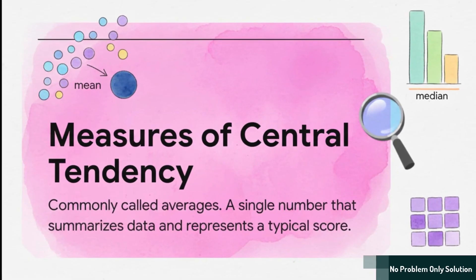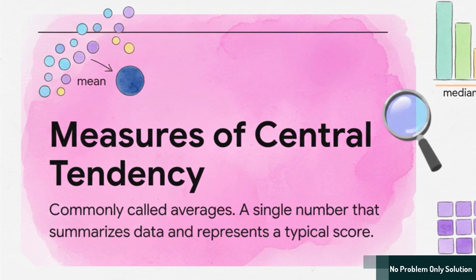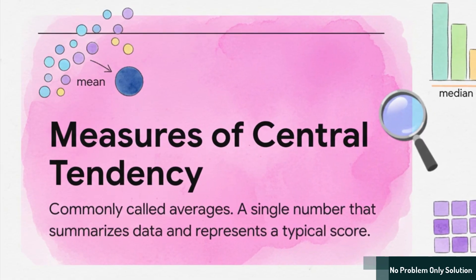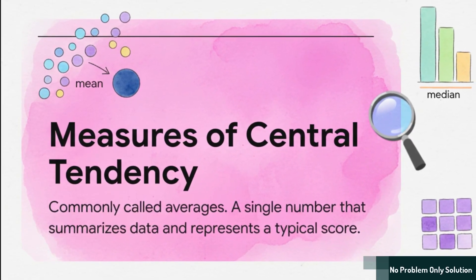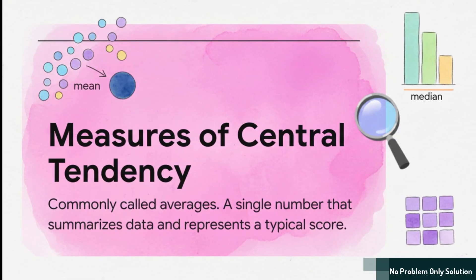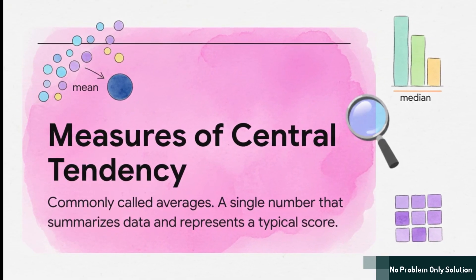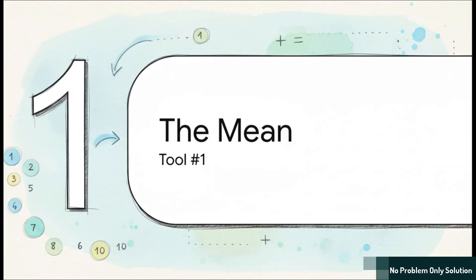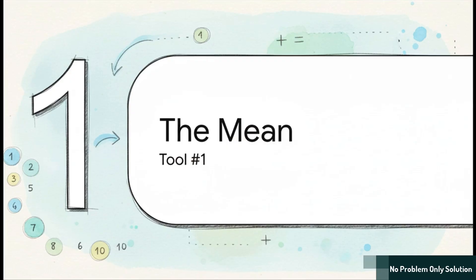Well, the answer is this powerful concept called Measures of Central Tendency. Yeah, I know, it sounds super academic, but don't worry, it's really just a fancy way of saying averages. Think of them as tools that help us find the center of the group, boiling down all that messy data into one clean, meaningful number. Okay, so let's pop open that toolkit of ours and grab the very first tool. This is probably the one you're most familiar with. It's called The Mean.